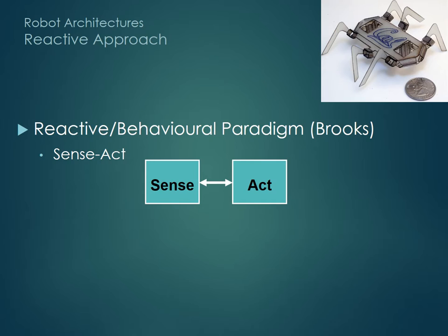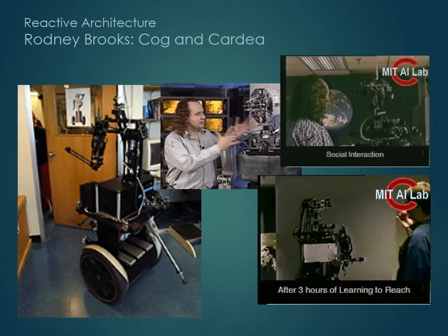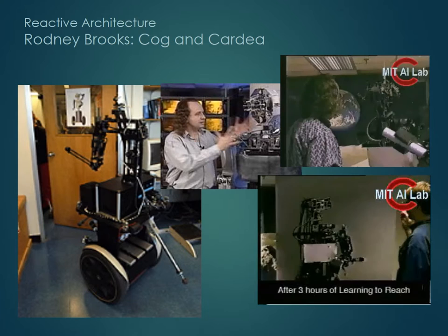Observation of simple creatures like cockroaches that react directly to stimuli, but yet can do complex and often very annoying things with only a few neurons, led Rodney Brooks of MIT to propose the SENSEACT, or reactive robotics approach. He observed that while an internal model of the world will be incomplete and inaccurate, the world itself can be used as its own model. This is Rodney Brooks with two of his reactive robots — Cardia, based on the Segway, and Cog, seen here trying to grab an apple.